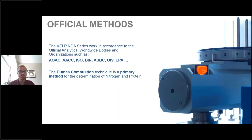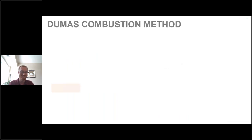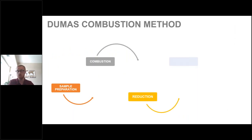The VELP NDA series uses primary methods in accordance with worldwide bodies such as AOAC, AACC, ISO, and EPA, among others. It is a primary method for the determination of nitrogen and protein in samples.